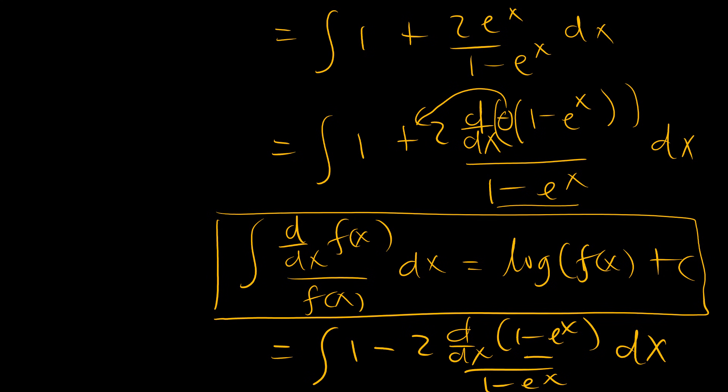f(x), and so we can see that we get x, that is the integral of 1 minus twice the natural logarithm of 1 minus e to the power x plus the integration constant.